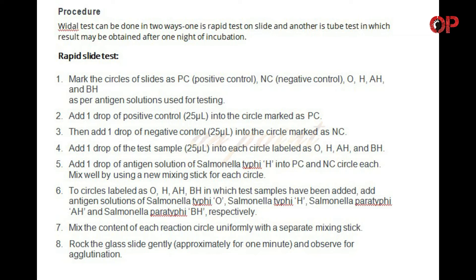Rapid slide test. Step one: mark the circles of slides as PC (positive control), NC (negative control), O, H, AH, and BH, as per antigen solutions used for testing. Step two: add one drop of positive control into the circle marked as PC. Step three: add one drop of negative control into the circle marked as NC.